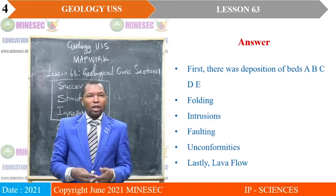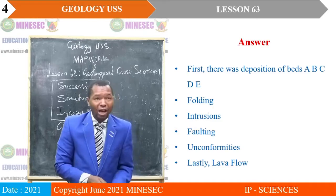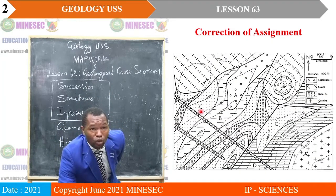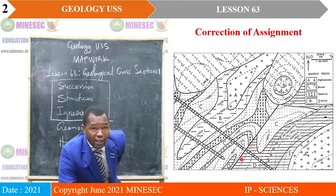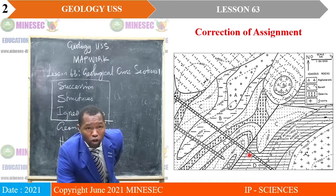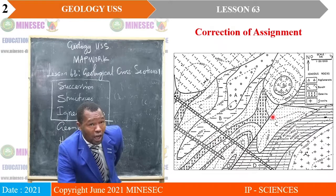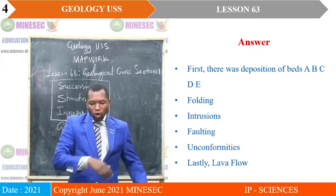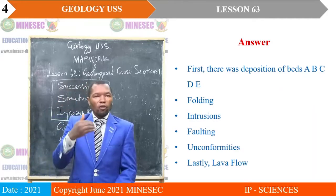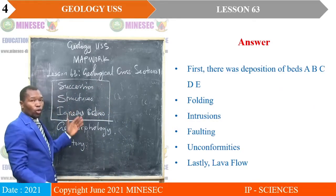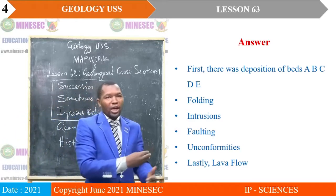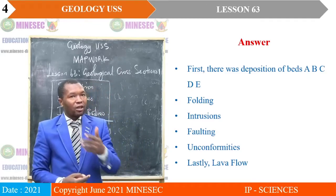Then, after the folding, there was intrusion. How do we know that there were intrusions? If you come to this map, you will realize that the fault is displacing the dyke. Therefore, the dyke was there first before the fault, and the dyke is an intrusion. So there was intrusion before the fault. You will not know how to do adjustment with the way the events were occurring if you do not know this order. Then, after the intrusions, there was the fault.